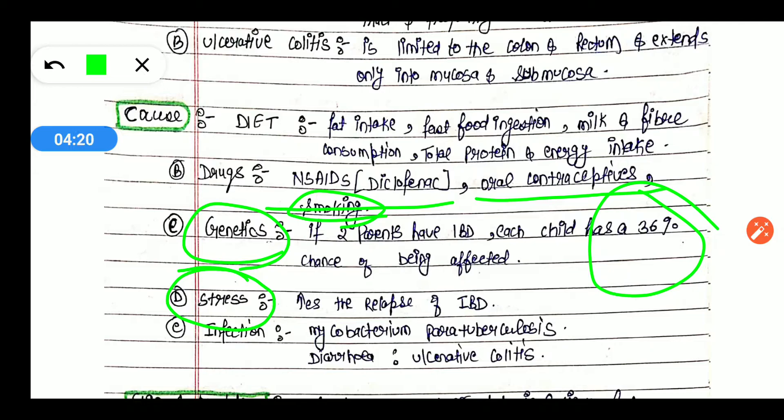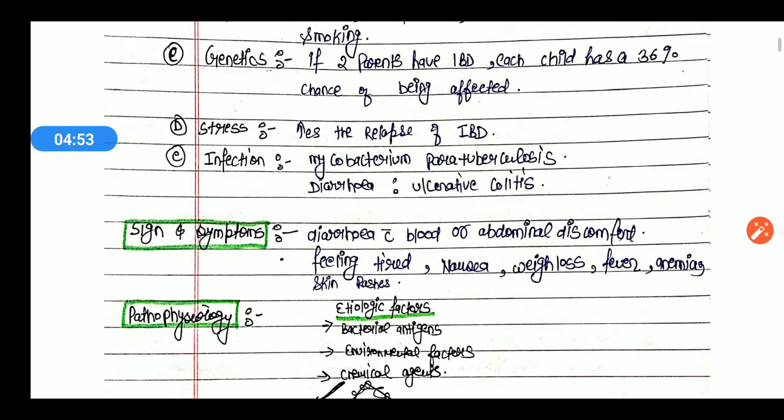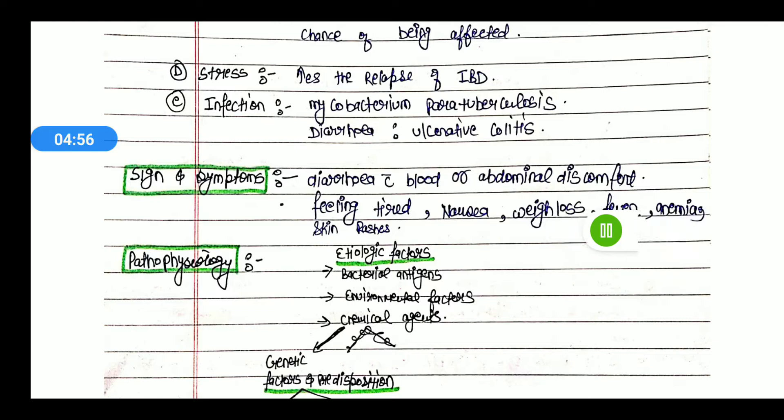Stress and infection can also be seen in ulcers. How to cause ulcers in the case of IBD? Infection can also cause IBD. Infections like diarrhea, ulcerative colitis, myocardium paratuberculosis, and tuberculosis can also be responsible for IBD.